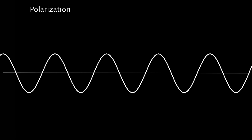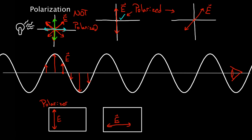Let me show you one more thing. This light was polarized vertically — that's called linear polarization. Same with these others: all linear polarization, just up and down, one linear direction, just diagonal. All of these are linear polarization.